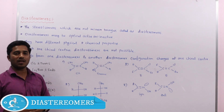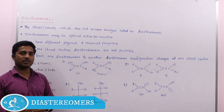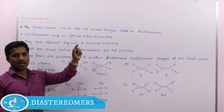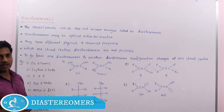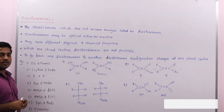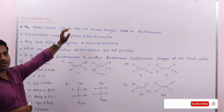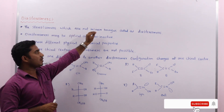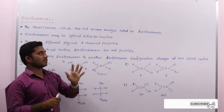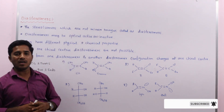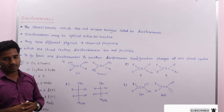In this class I am going to discuss diastereomers. Diastereomers are stereoisomers which are not mirror images of each other.